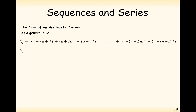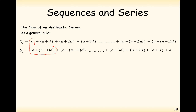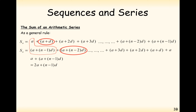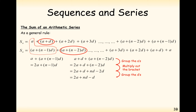The first thing we do is reverse the order of the summation — you need to be able to replicate this in an exam. Adding in columns: the first pair gives a plus (a + (n−1)d), which is 2a + (n−1)d. The next pair gives (a + d) plus (a + (n−2)d), which again gives 2a plus (n−1)d, since d + (n−2)d = (n−1)d.